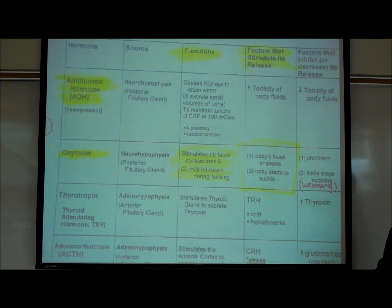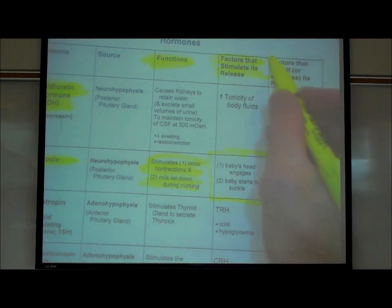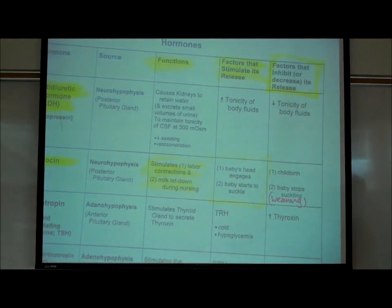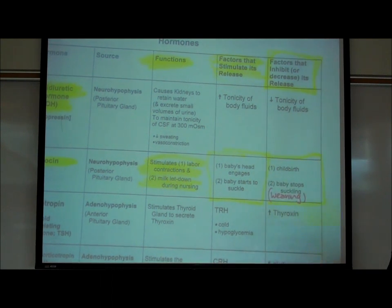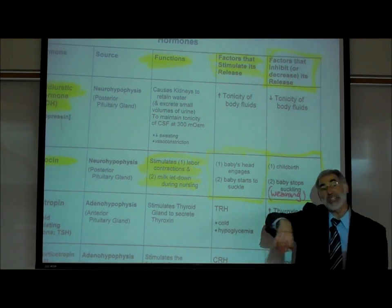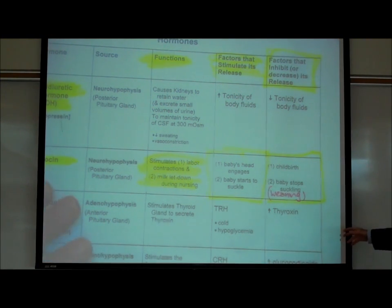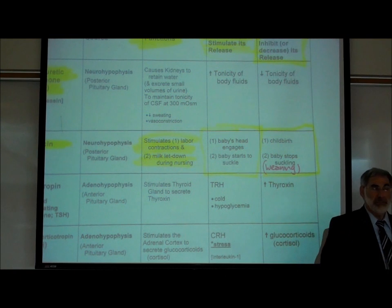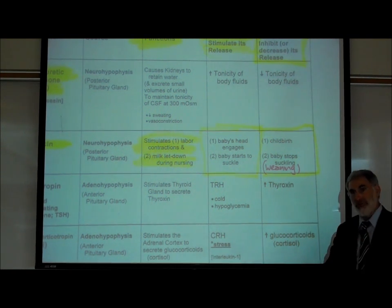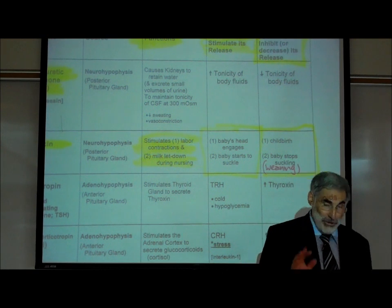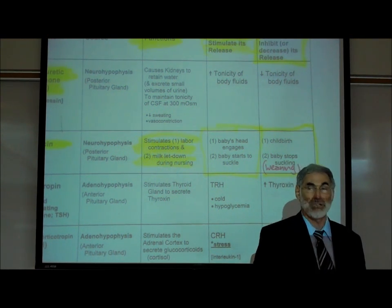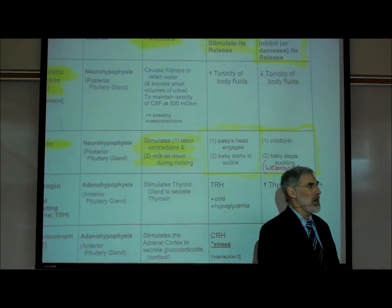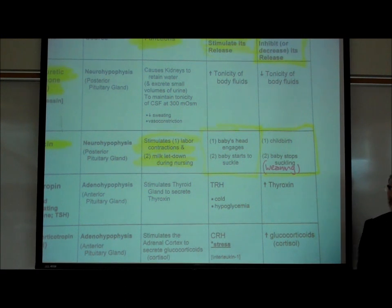What would stop the release of oxytocin? As we said — childbirth, when the baby comes out, shuts off that mechanism. Or, if you stop having the baby suckle — that's called weaning the baby. Most women will stop nursing by the time the baby starts to have its first teeth, around six months, because nursing on the nipple with teeth is a whole different story.